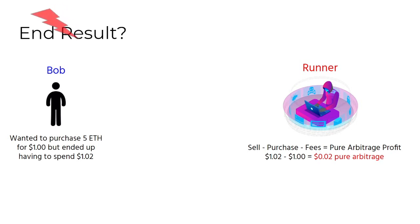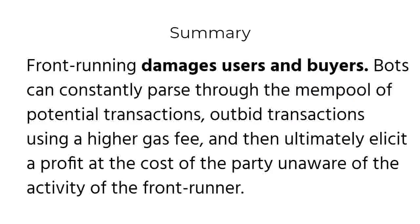The front-runner, on the other hand, made pure arbitrage profit — zero risk involved. Front-running damages users and buyers. Bots can constantly parse through the mempool of potential transactions, outbid transactions using a higher gas fee, and then ultimately elicit a profit at the cost of the party unaware of the front-runner's activity.